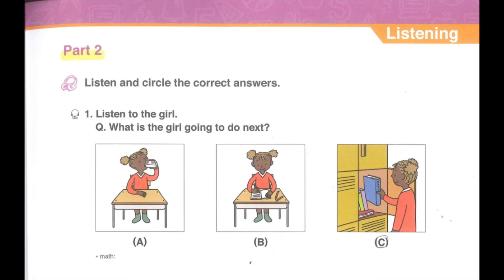Part 2. Listen and circle the correct answers. Number 1. Listen to the girl. I usually keep my textbooks in my locker. I need my math book now. What is the girl going to do next?